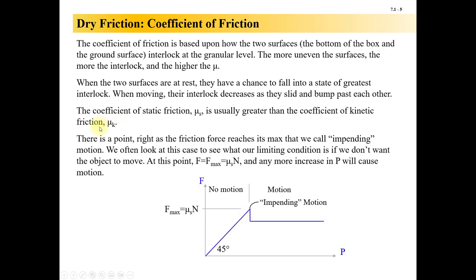The coefficient of static friction is usually greater than the coefficient of kinetic friction. There is a point right as the friction force reaches its max that we will call impending motion. We often look at this case to see what our limiting condition is if we don't want the object to move. At this point, the force is equal to the maximum friction force, which is mu_s times N, and any more increase in our applied force P will cause motion.